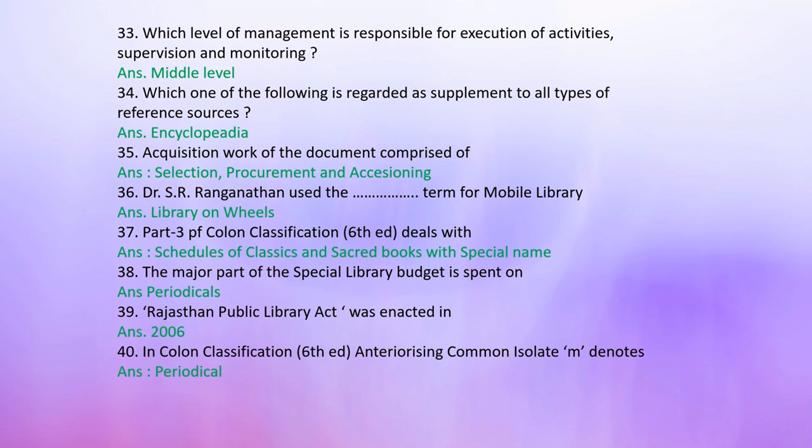Question 35: Acquisition work of a document comprises — Answer: Selection, procurement, and accessioning. Question 36: Dr. S. Ranganathan used the term for mobile library — Answer: Library on wheels. Question 37: Part 3 of Colon Classification, 6th edition, deals with — Answer: Series of classics and sacred books with special names.